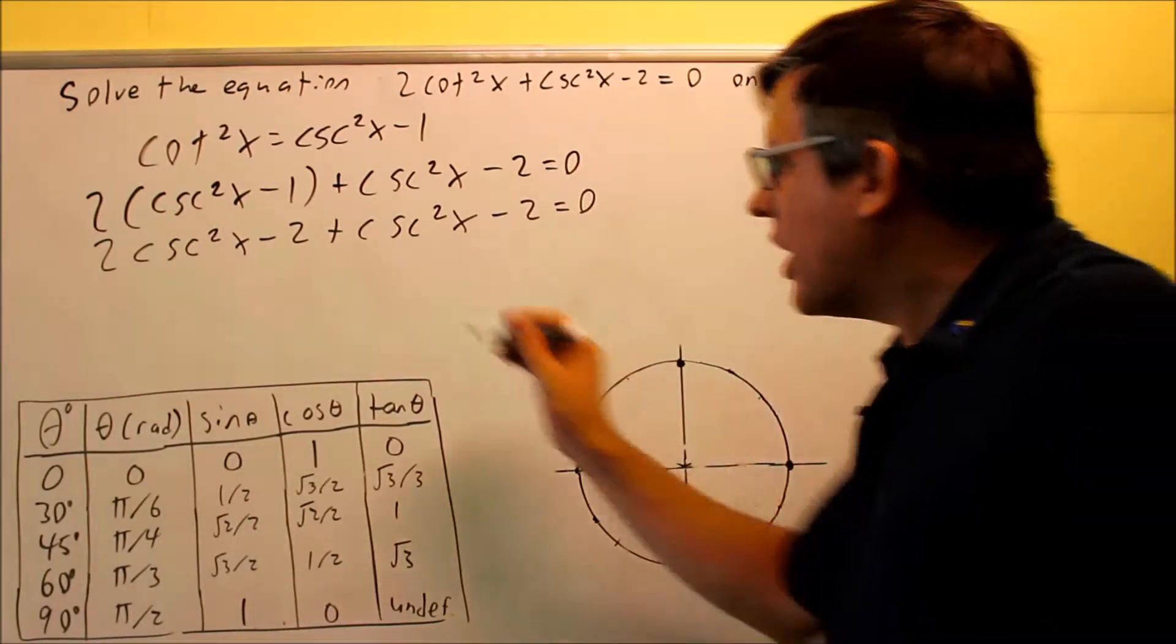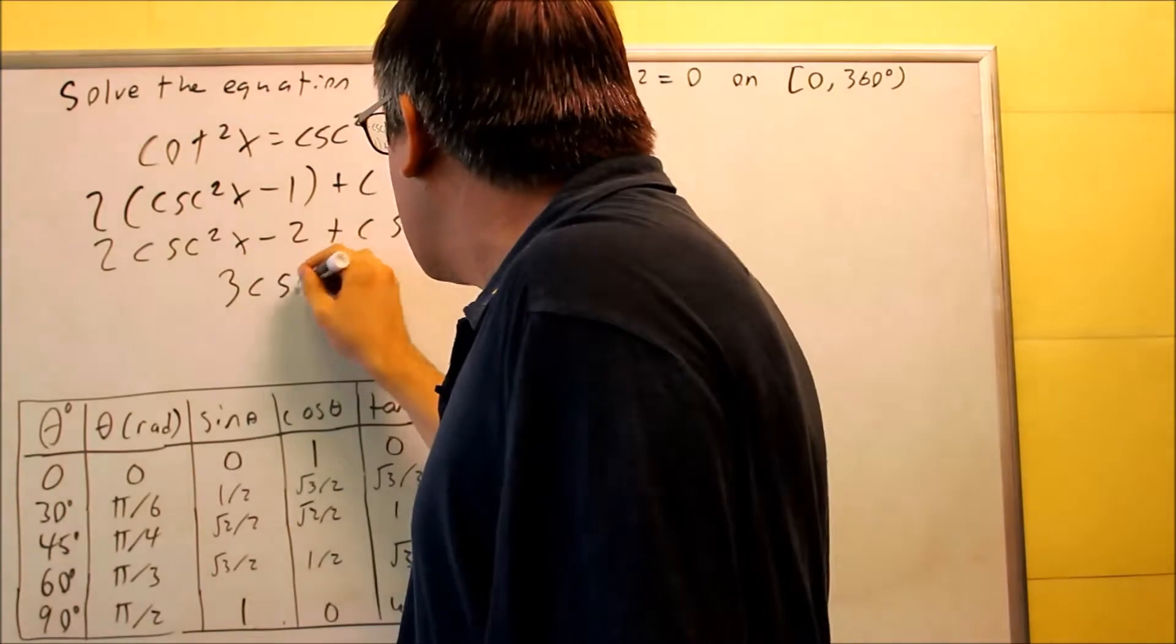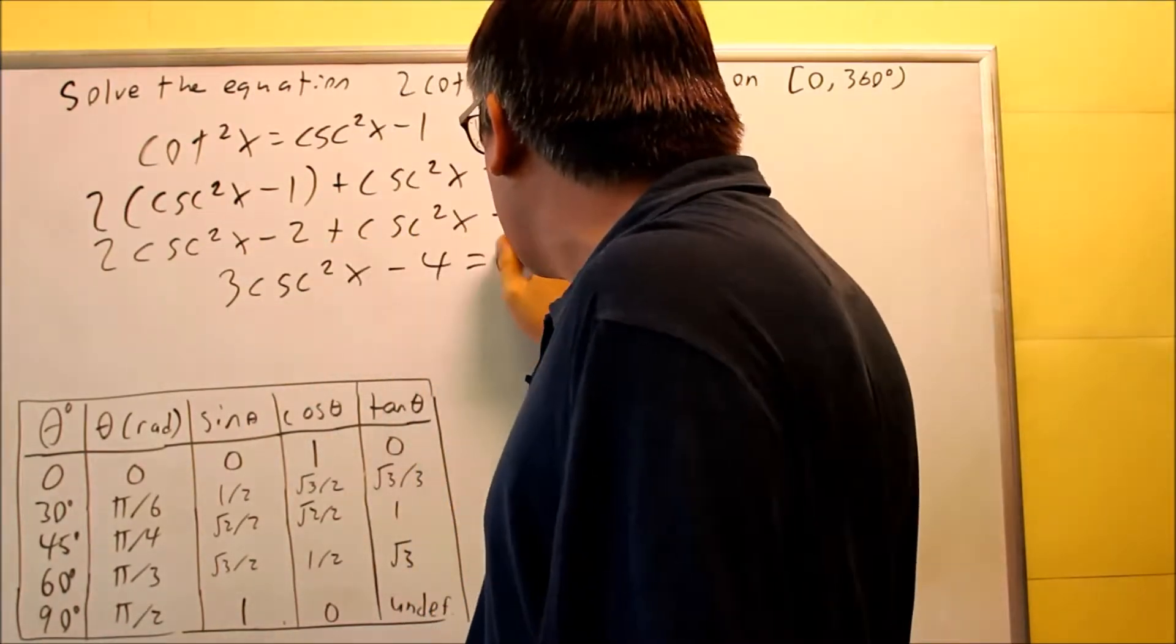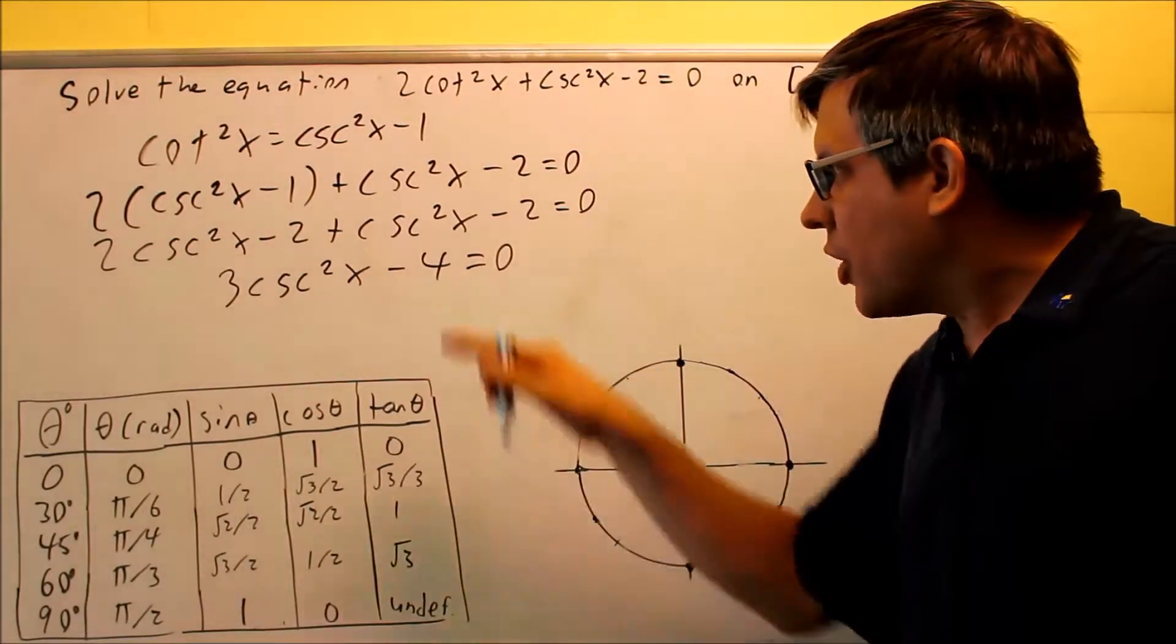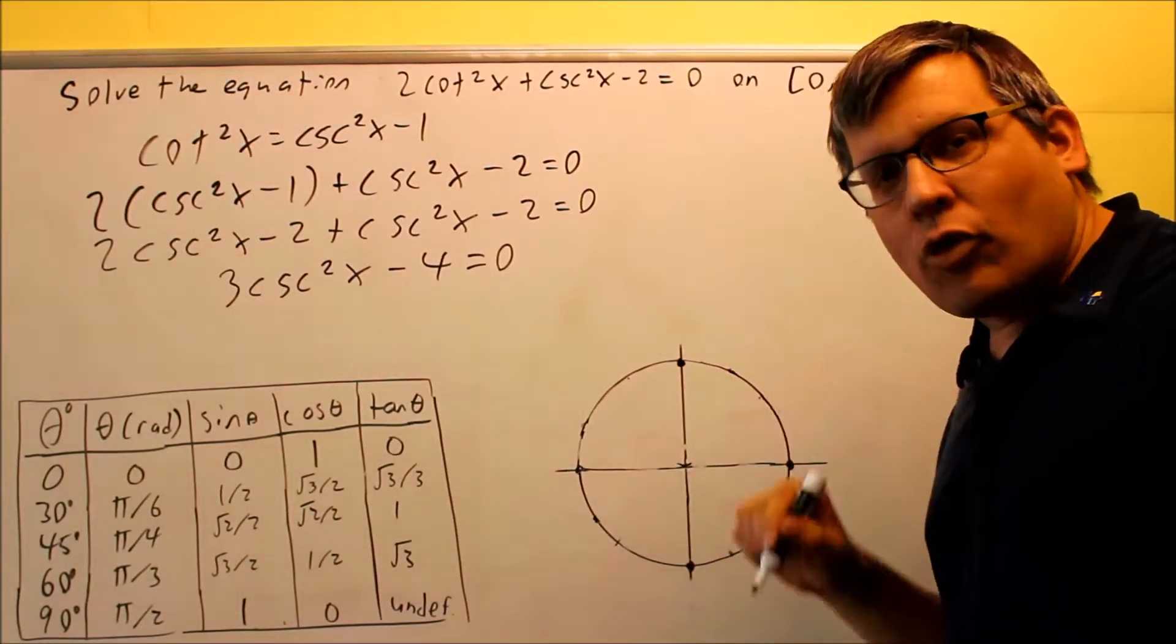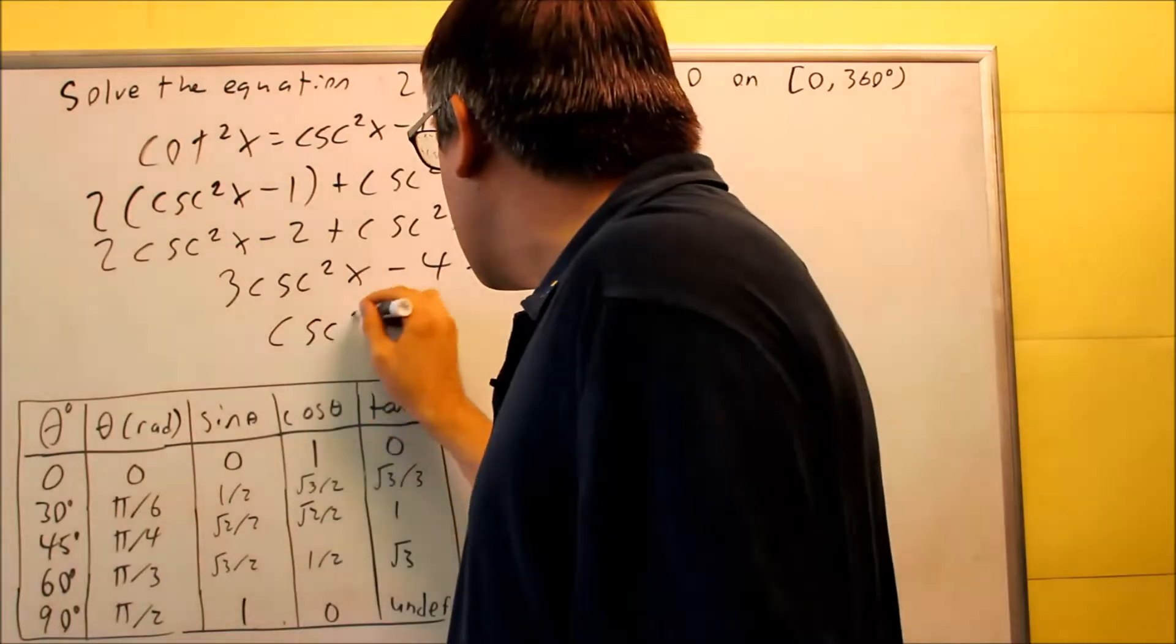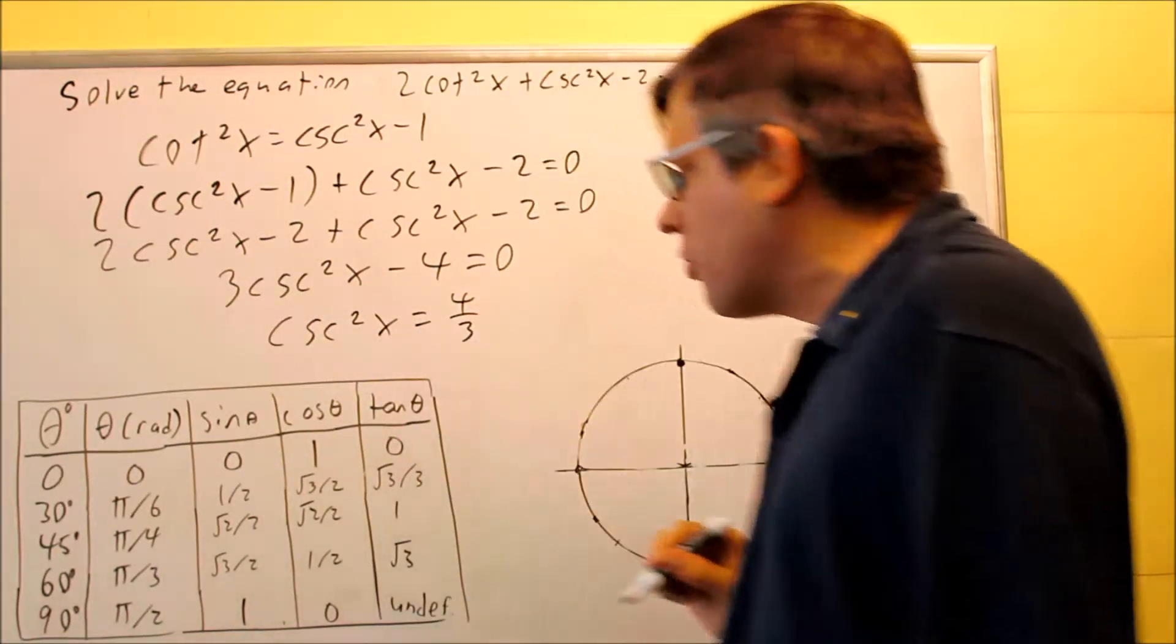I'm going to combine this together like terms. So I have 3 cosecant squared x minus 4 that's going to equal 0. To solve for cosecant squared we can do that by adding 4 divided by 3 and we get cosecant squared x equals positive 4 over 3.